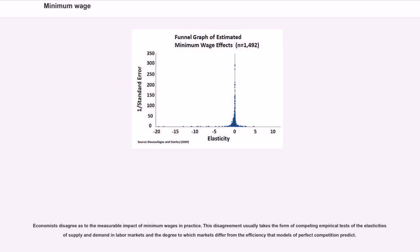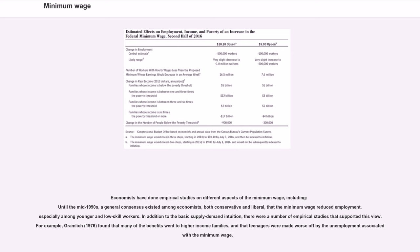Economists disagree as to the measurable impact of minimum wages in practice. Until the mid-1990s, a general consensus existed among economists, both conservative and liberal, that the minimum wage reduced employment, especially among younger and low-skill workers. In addition to the basic supply-demand intuition, there were a number of empirical studies that supported this view. For example, Gramlich (1976) found that many of the benefits went to higher-income families, and that teenagers were made worse off by the unemployment associated with the minimum wage.